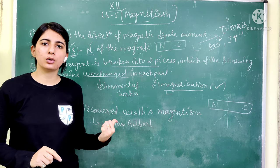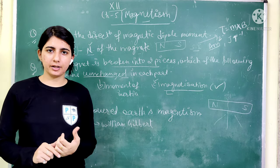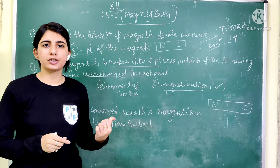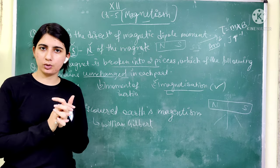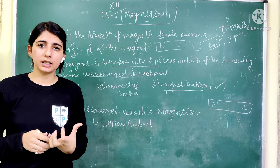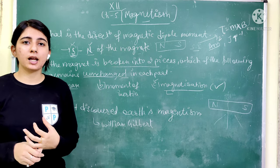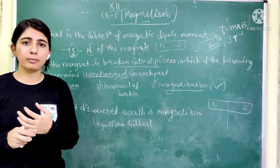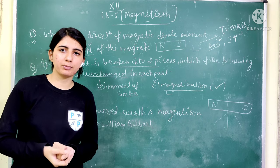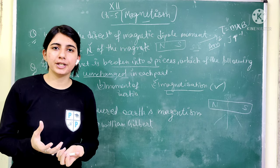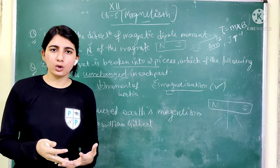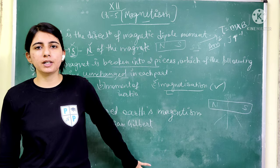He made this discovery in the year 1600. He told us that the Earth itself acts like a magnet and has magnetic properties. He also noted that if iron gets heated, its magnetic property gets reduced. These are some important points from William Gilbert.